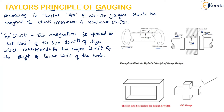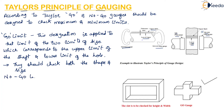The go gauge should have a full form — that is, it should check both the shape and the size as well. The no-go limit is applied to that limit of the two limits of size which corresponds to the minimum material condition. It is the lower limit of the shaft and the upper limit of the hole.